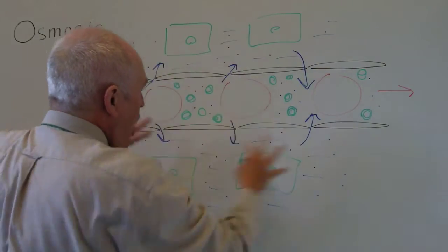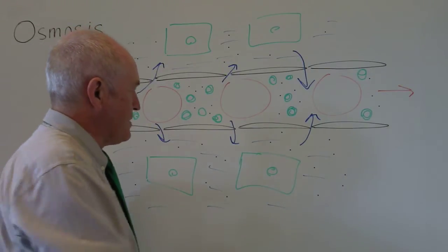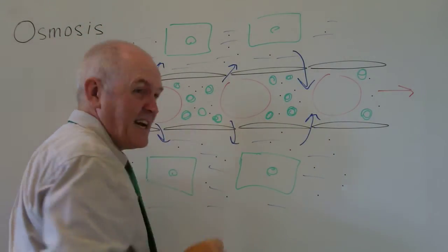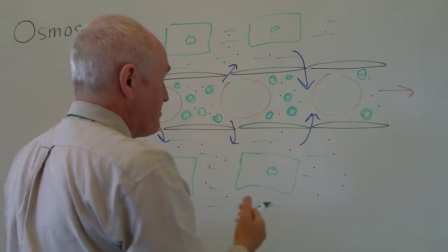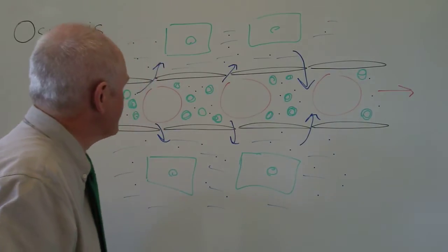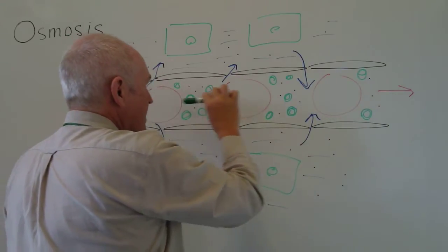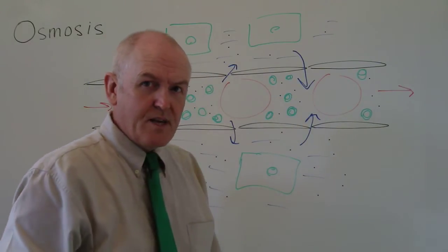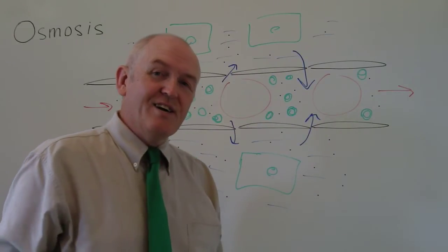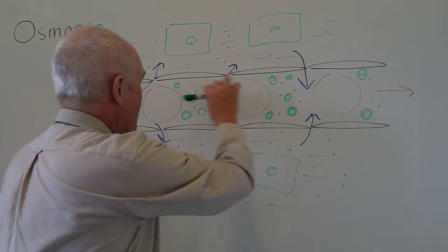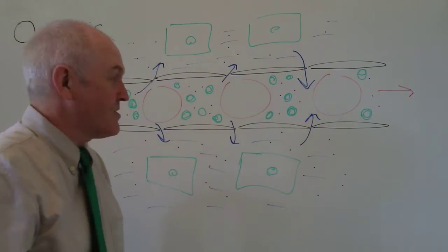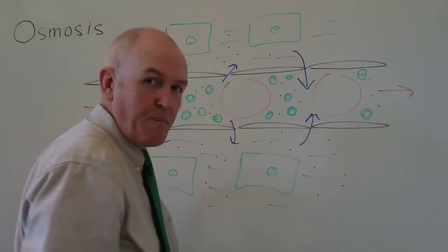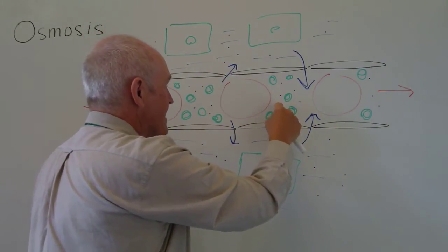It is the difference between the lack of plasma proteins in the interstitial space and their presence in the intravascular compartment that develops the osmotic pressure. Now, if you take the whole osmotic pressure altogether, the vast majority is generated by the sodium ions. The amount generated by plasma proteins is actually only about half a percent of the total. Because it is so important, we give this osmotic pressure generated by plasma proteins a special name: we call it the oncotic pressure, or sometimes the colloidal osmotic pressure, because these are large colloidal molecules.